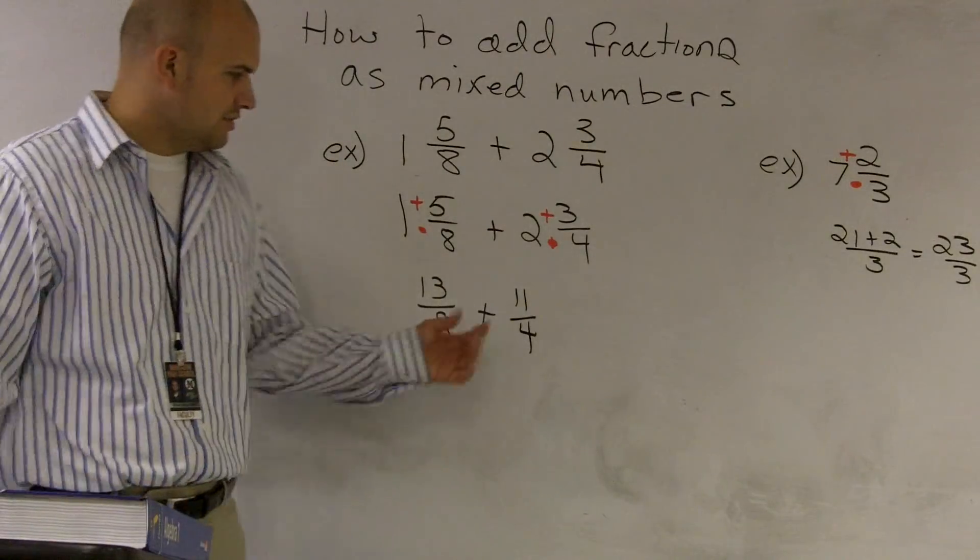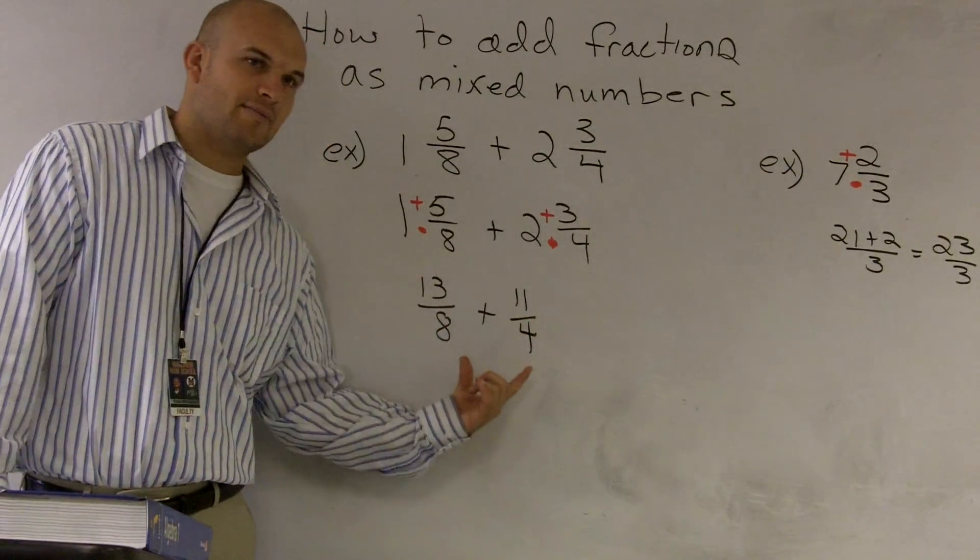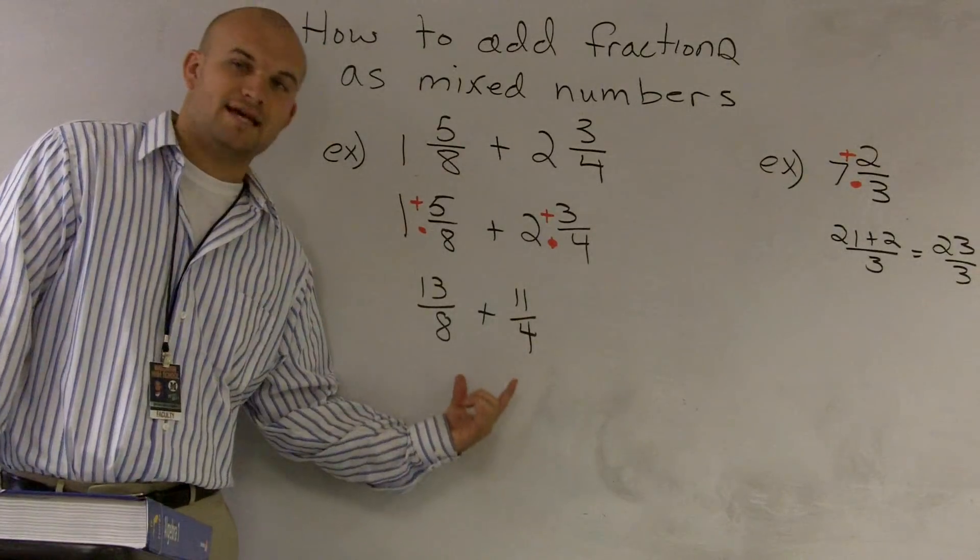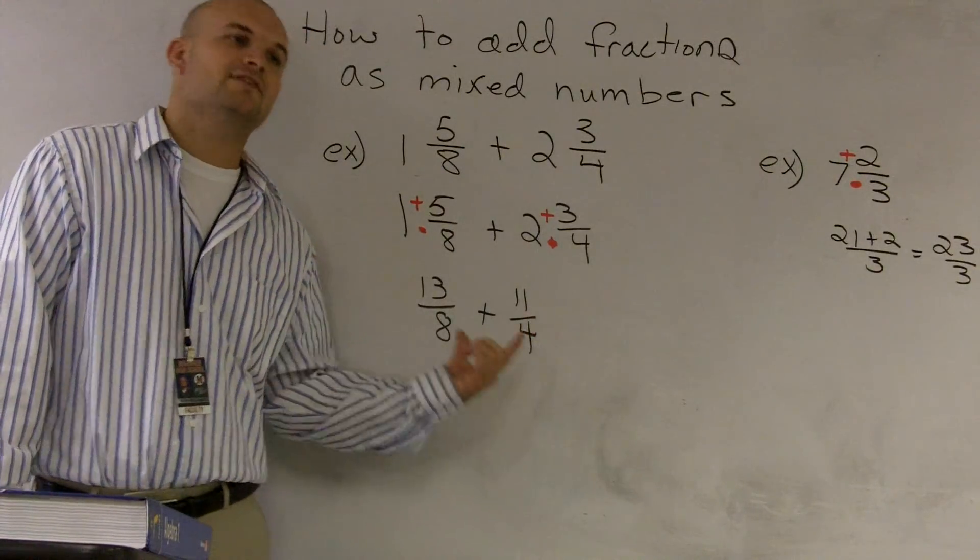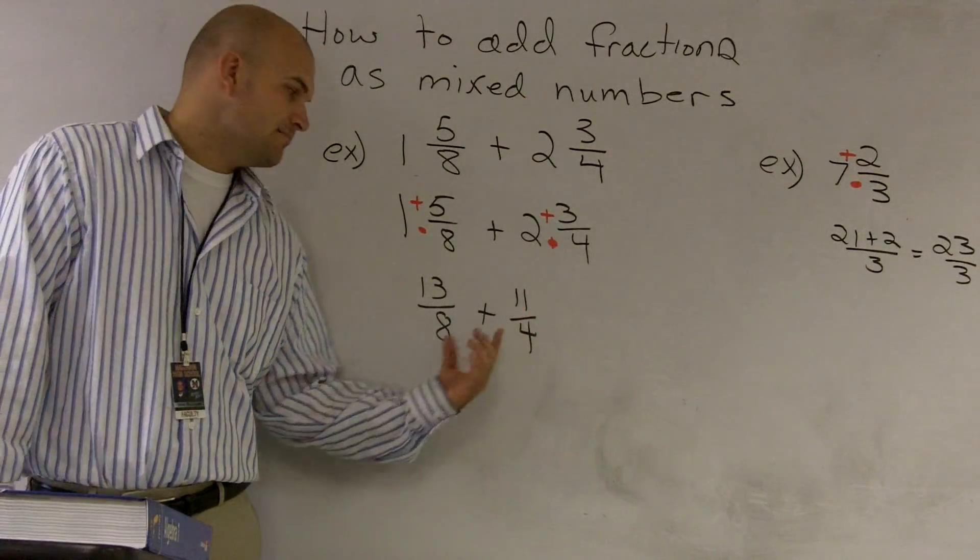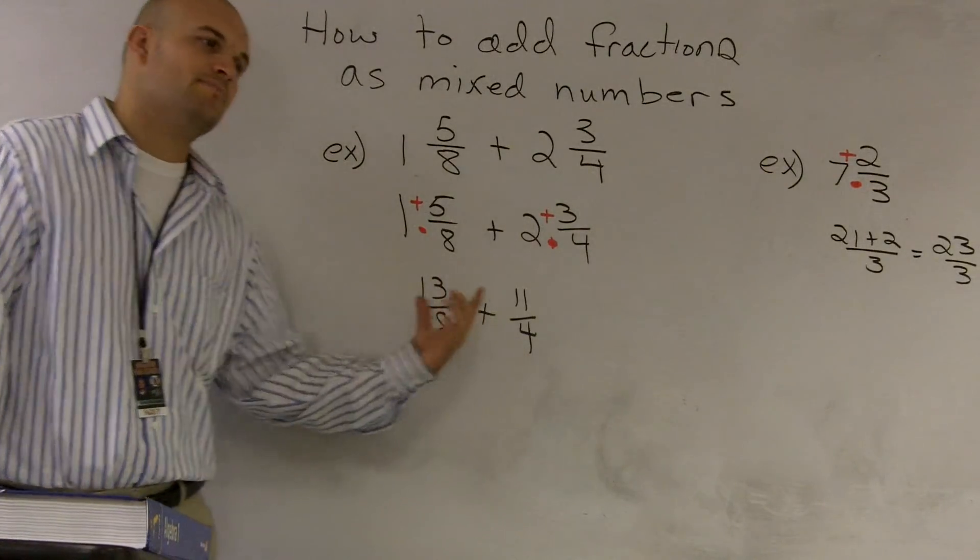Now, if you look, we can add our fractions except we have a problem with our denominators because our denominators are not the same. So as you guys remember, we need to find the LCD and then multiply each number to get our LCD on the bottom.